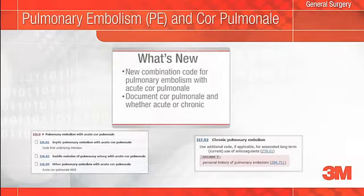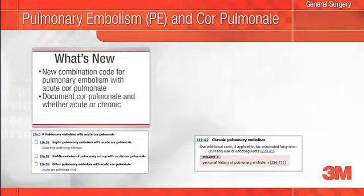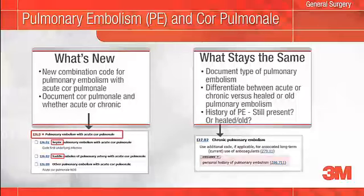ICD-10 has a new combination code to capture the patient who has a pulmonary embolism with acute cor pulmonale. The takeaway here is the documentation of cor pulmonale and whether it is acute or chronic. What stays the same is that you still need to document the type of pulmonary embolism such as septic or saddle, and whether the pulmonary embolism is acute, chronic, healed, or old.